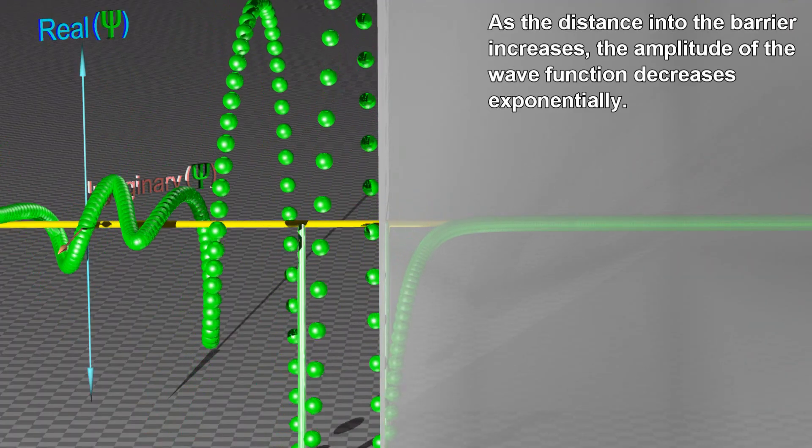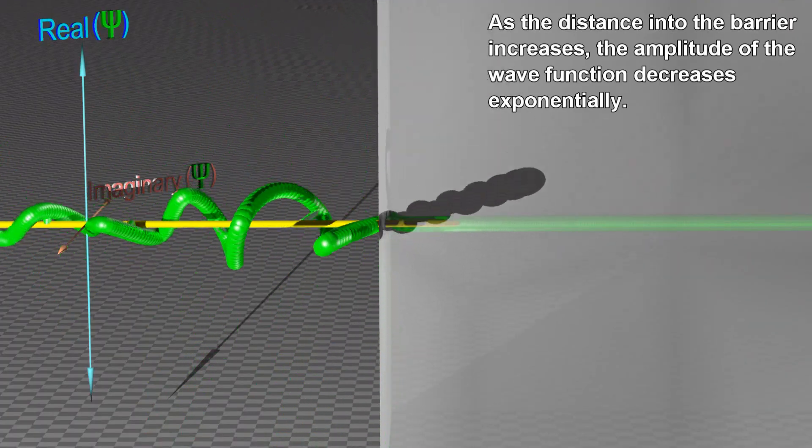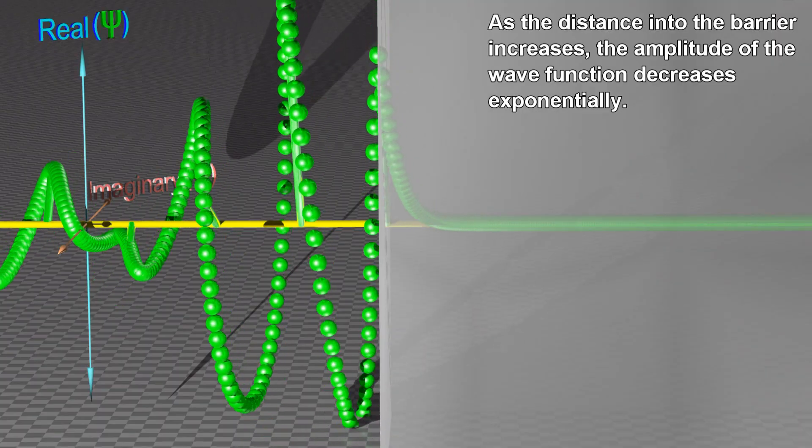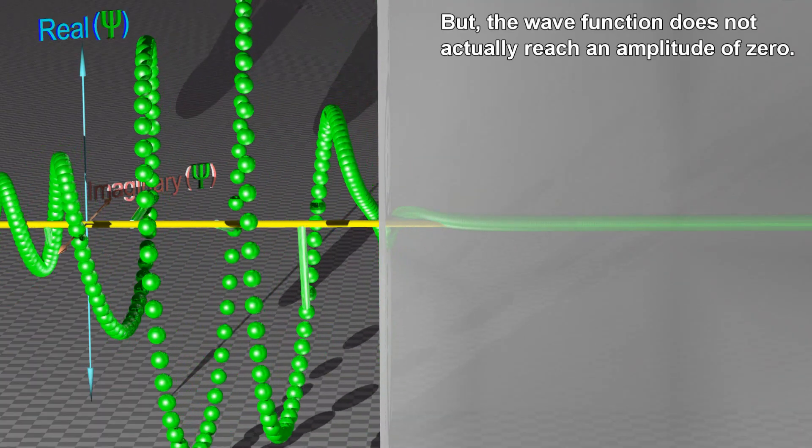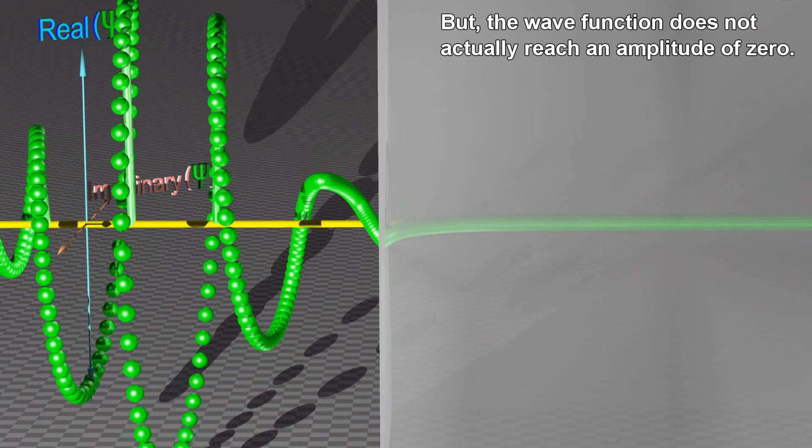As the distance into the barrier increases, the amplitude of the wave function decreases exponentially. But the wave function does not actually reach an amplitude of zero.